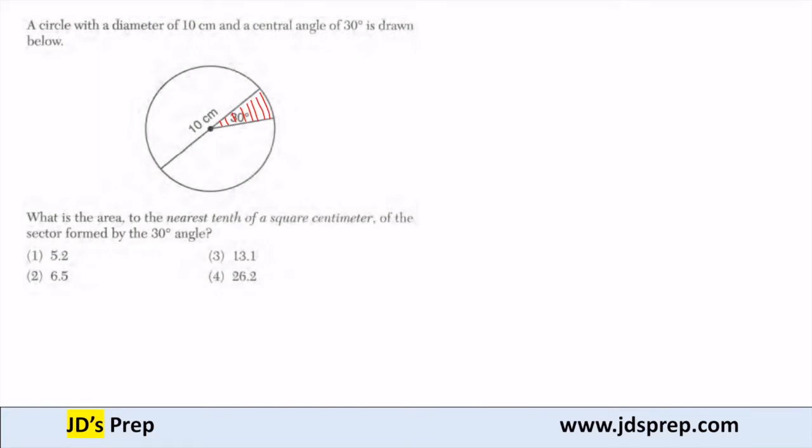The first thing that we need to remember is the area of a circle. So the area is equal to pi r squared. So let's find the area of the whole circle.